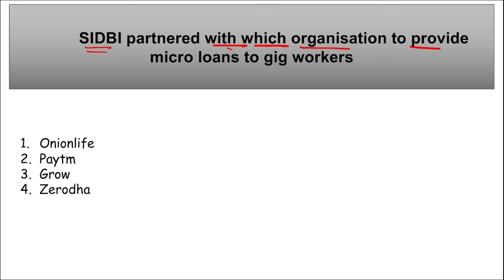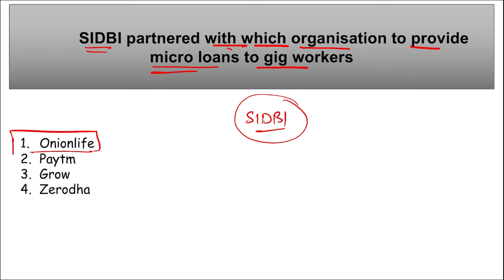Next: SIDBI has partnered with which organization to provide micro-loans to gig workers? SIDBI — Small Industries Development Bank of India — has partnered with Onion Life, a Bengaluru, Karnataka-based fintech startup, to provide micro-loans to gig workers. SIDBI is basically an organization that provides loans to small businesses and MSMEs to help them grow.